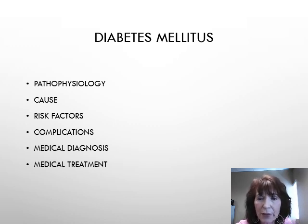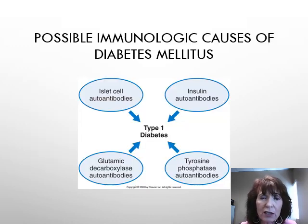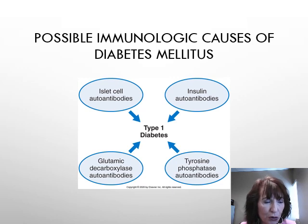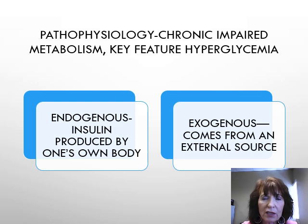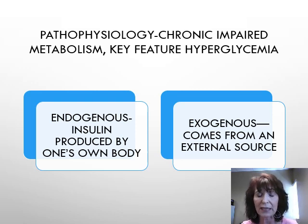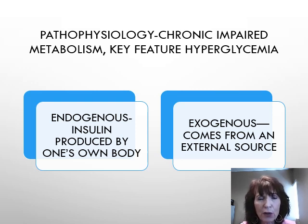There are immunological causes of diabetes involving antibody processes. Two important words to know: endogenous insulin is produced by one's own body, and exogenous means insulin comes from an external source, such as an injection or oral medication for hyperglycemia. Be sure you know the difference between these terms.